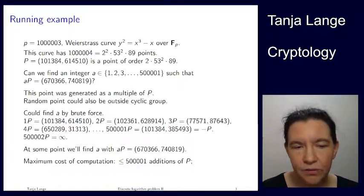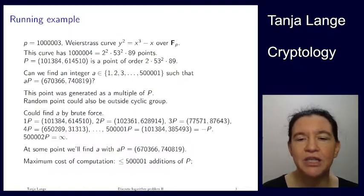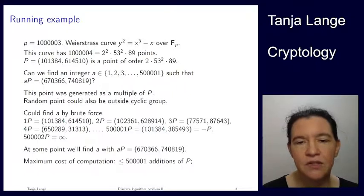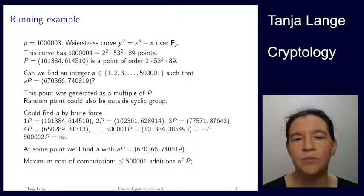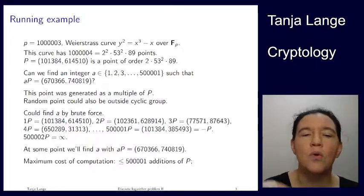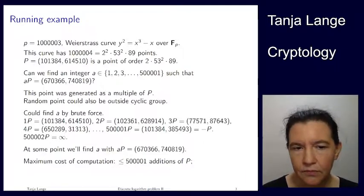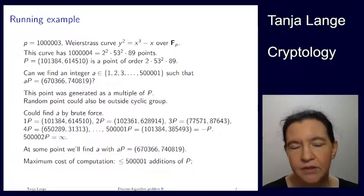I'm not going to spend the whole lecture on running through those. Eventually it will have reached 500,001P. Now, two things to notice. If you look at the coordinates, then the x-coordinate of this 500,001 is exactly the same as the x-coordinate of P. The y-coordinate is different, and if you add those two y-coordinates, you're actually getting a million three, meaning that these y-coordinates are each other's negative.